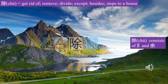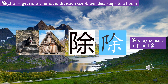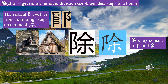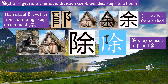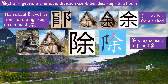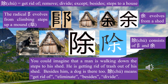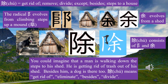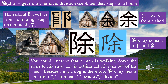Character 除 (Chú) consists of two parts. The radical 阜 (Fú) evolves from climbing steps up a mound, and 余 (Yú) evolves from a shed. You could imagine that a man is walking down the steps to his shed, getting rid of trash out of his shed. Besides him, a dog is there too. 除 means get rid of, eliminate, besides, divide.